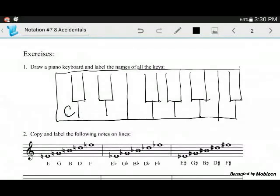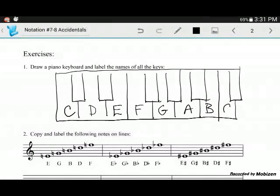We have a C here, then a D, and we just keep going alphabetically. E, make sure our F is next to the three black keys. G, A, B, and here we are ending back on the C, which is why we drew the extra black key.